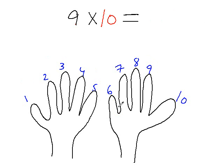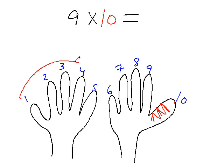Using the same logic, can you tell me what would be 9 times 10? Well, this is a very easy one. Just fold the tenth finger of your hand. So you have 5 plus 4 — 9 fingers here — and 0 fingers there. So the answer is 90.